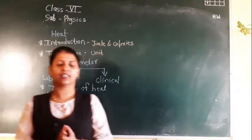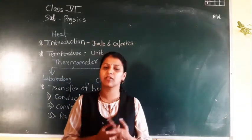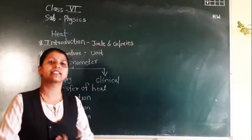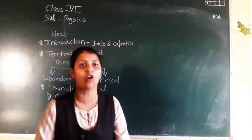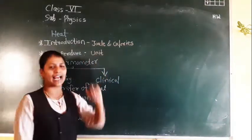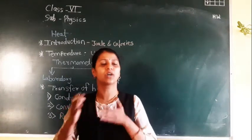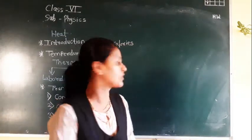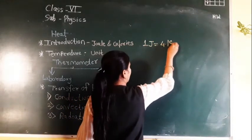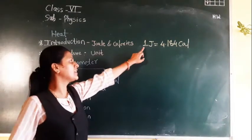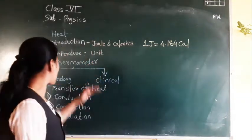First, introduction — what is meant by heat? Heat is nothing but a form of energy. The SI unit, the accepted standard unit of heat, is joule or calorie. If you want to convert 1 joule into calories, the formula is: 1 joule equals 4.184 calories.